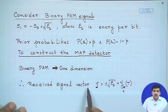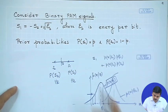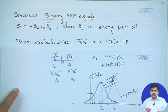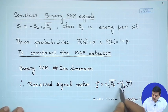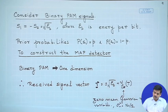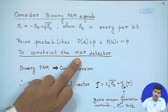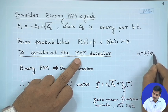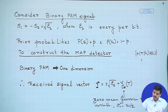The received signal R can be written as ±√E_b plus noise, since the two signals are +√E_b and −√E_b. This is the outcome of the matched filter at the sampling time t, and the noise component is zero-mean with variance σ_n² = N_0/2, as discussed earlier. To construct the MAP detector, we must compute P(R | S_i) × P(S_i) and find the i that maximizes this.